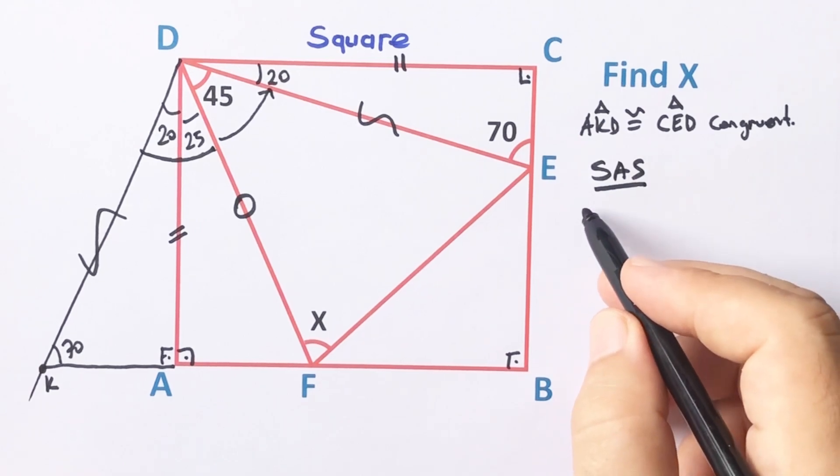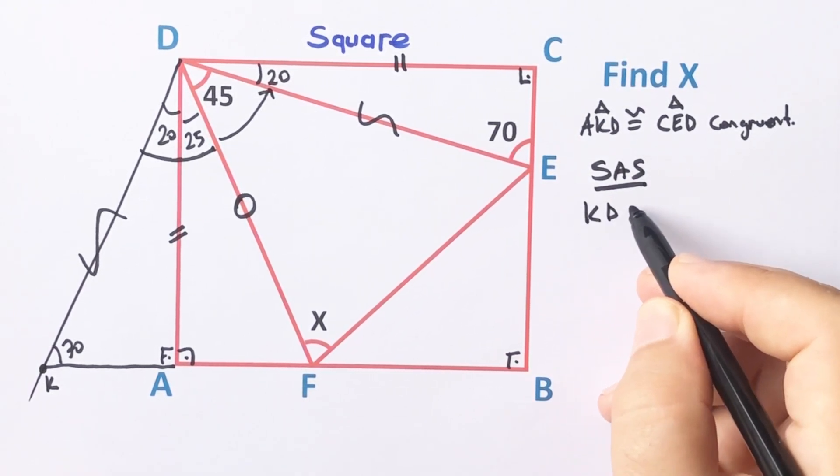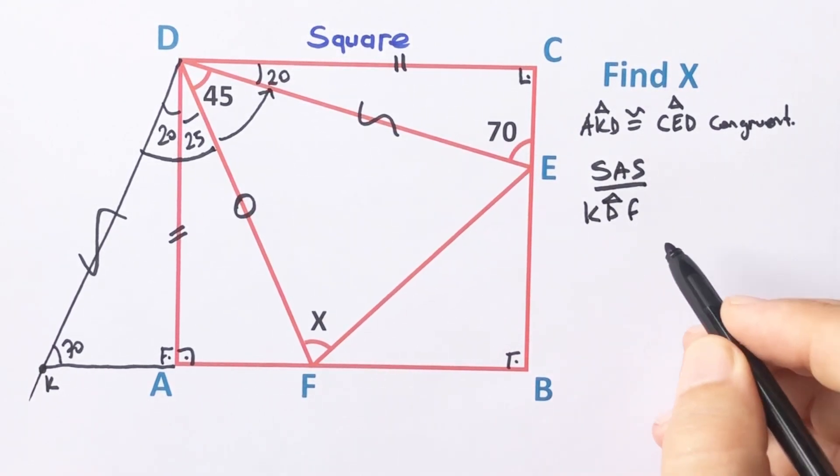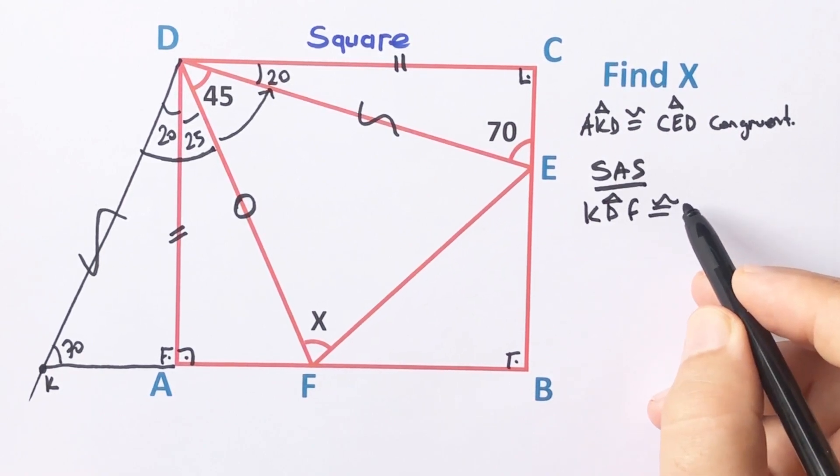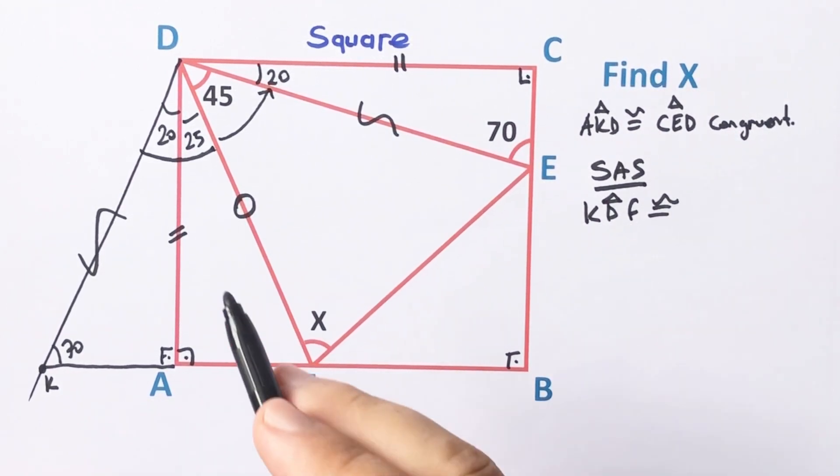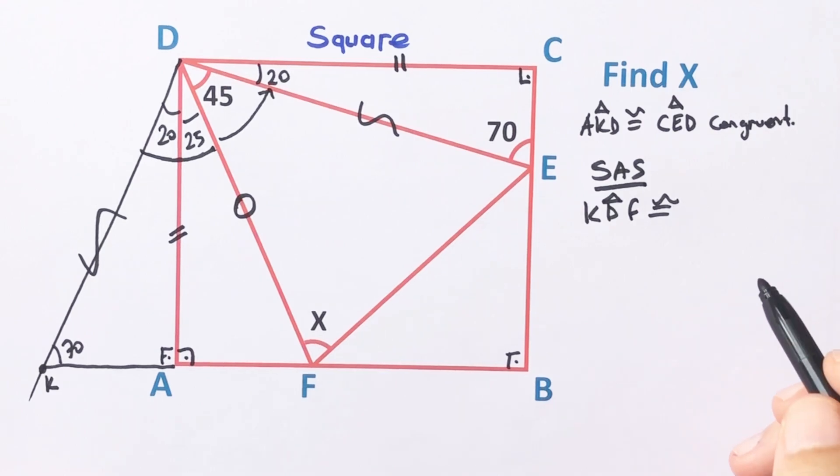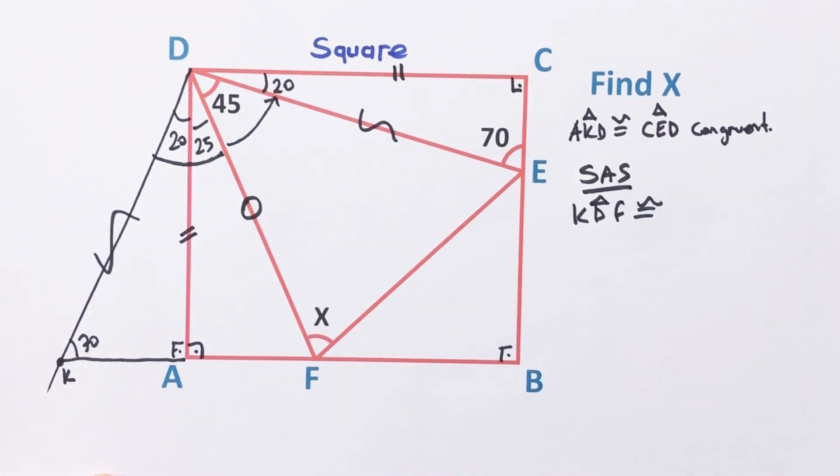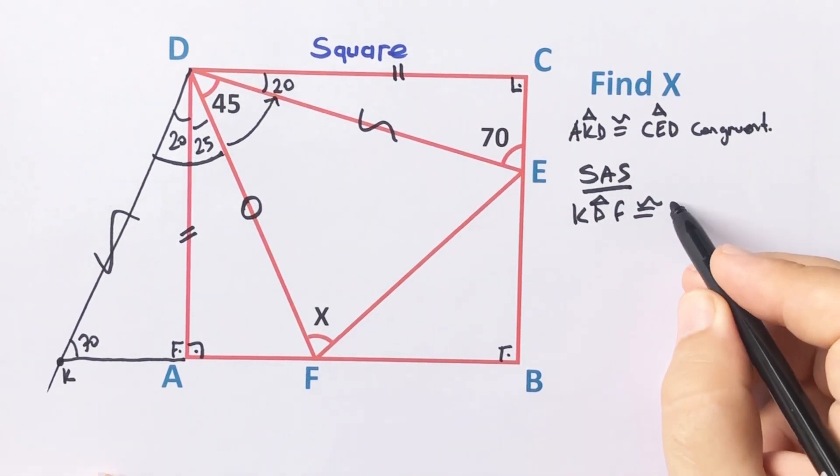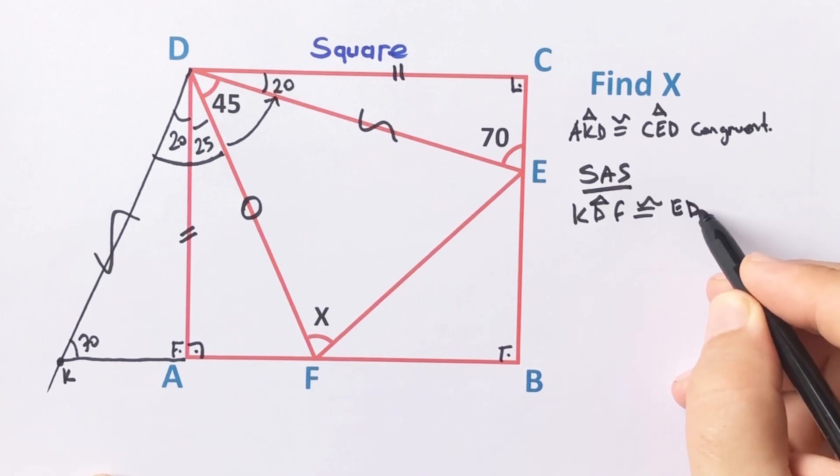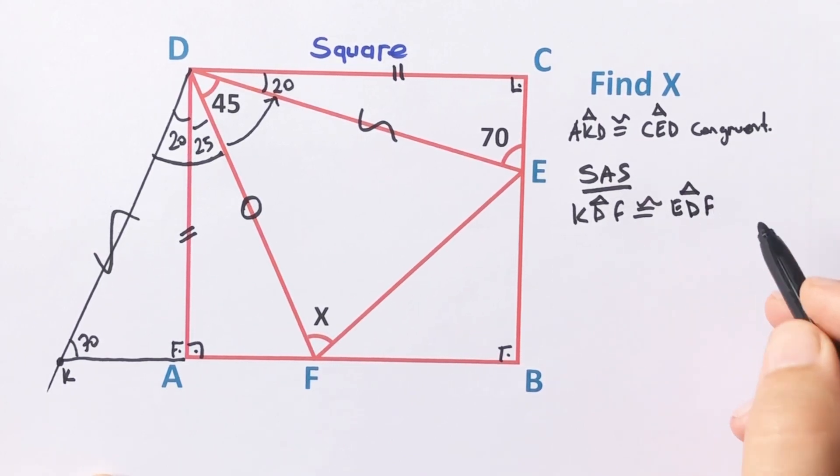Therefore according to side angle side, KDF triangle and EDF triangle are congruent.